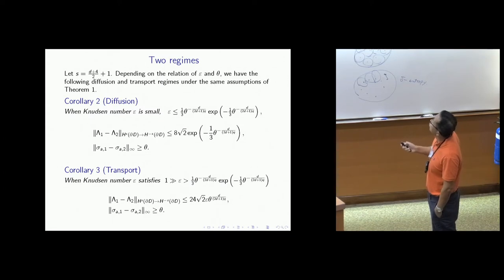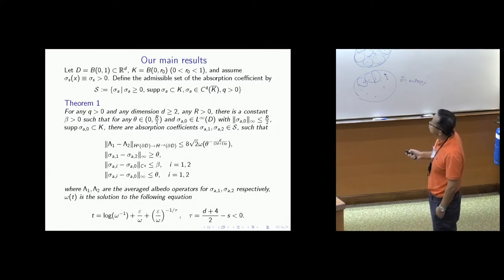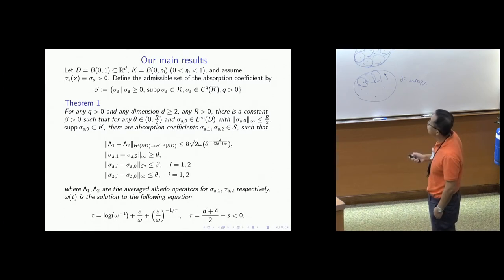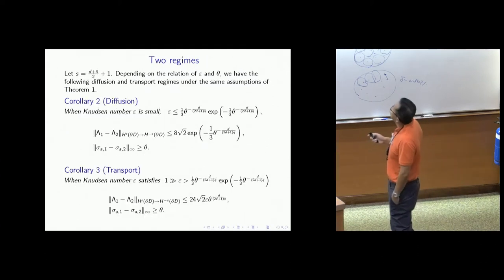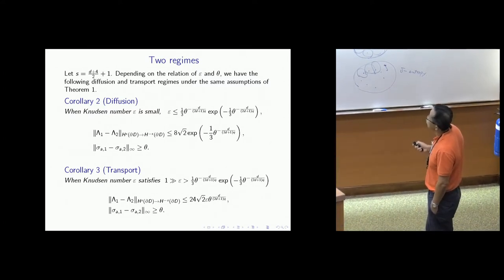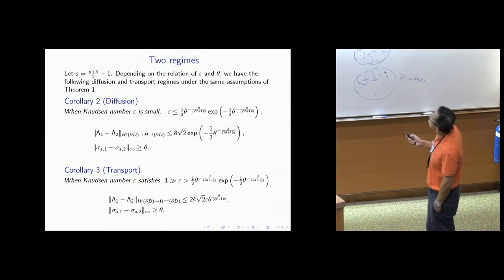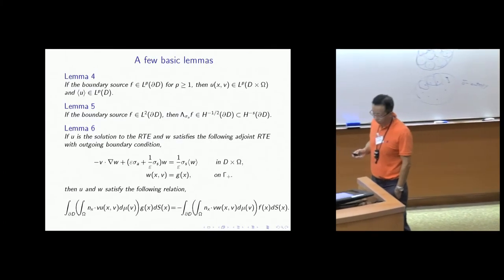If we choose S to be a particular number, everything becomes much simpler: these two terms become the same, and it reduces to a comparison between log omega with respect to epsilon — the mean free path or Knudsen number — with respect to omega and the perturbation. This balance determines whether you are in the diffusion-type instability regime or the transport-type instability regime, depending on the relation between the Knudsen number and the perturbation.